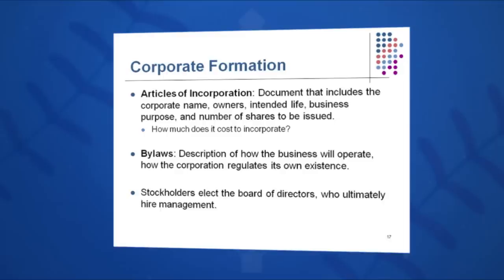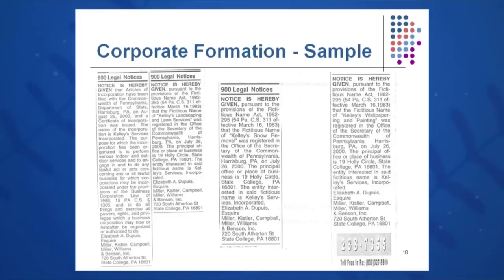Also published in the local newspaper are notices of incorporation. Here's a sample from a recent newspaper: Kelly Services, incorporated by Liz Dupuis of Miller, Kistler, Campbell, and Williams. They also created some fictitious names — Kelly's Wallpapering, Kelly's Snow Removal, and Kelly's Landscaping. So these folks have something to do all year long: during the summer they'll do landscaping, during the winter they'll plow snow, and when there's no snow in January they'll do painting and wallpapering. A very clever use of the fictitious names act, all done under the articles of incorporation.